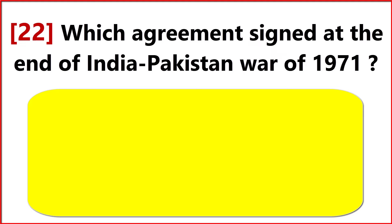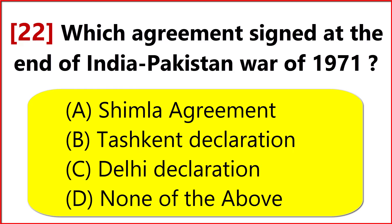Which agreement was signed at the end of the India-Pakistan war of 1971? Answer Option A: Shimla Agreement.